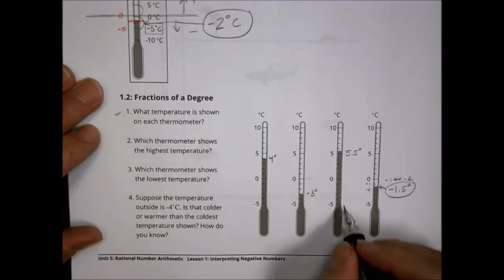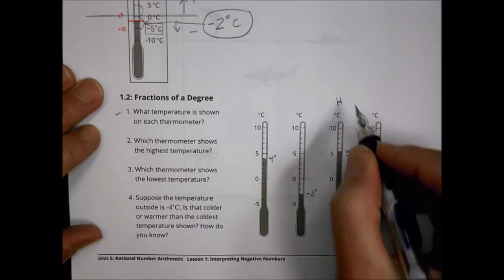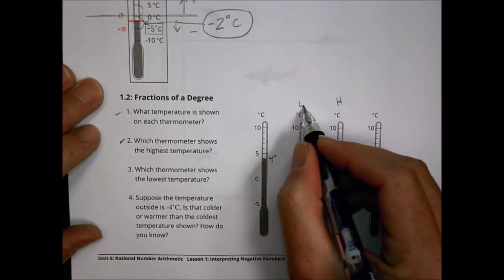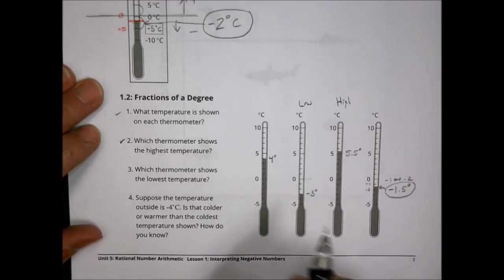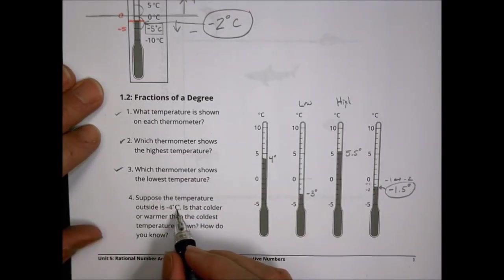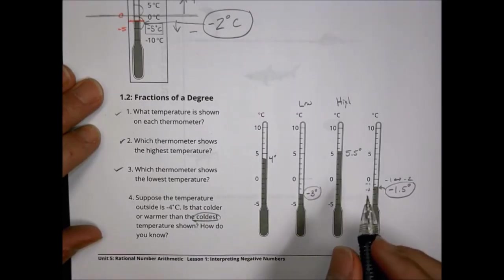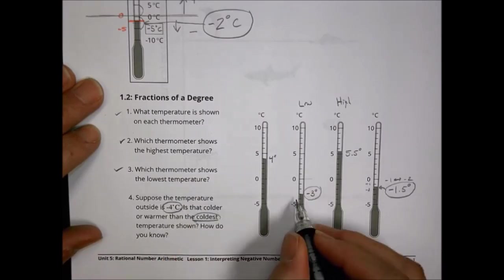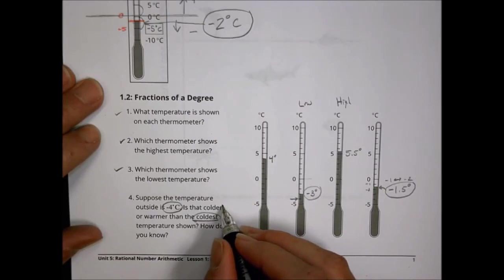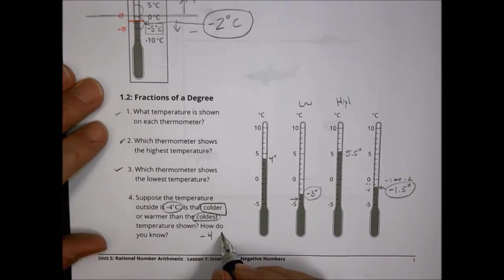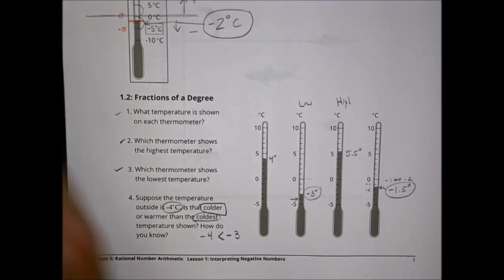Which temperature shows the highest value? That's 5.5 degrees. The lowest temperature is negative three degrees. Now, suppose the temperature outside is negative 4°C — is that colder or warmer than the coldest temperature shown? Our coldest is negative three. Negative four would be located below that, so negative four is actually colder, because negative four is less than negative three in value.